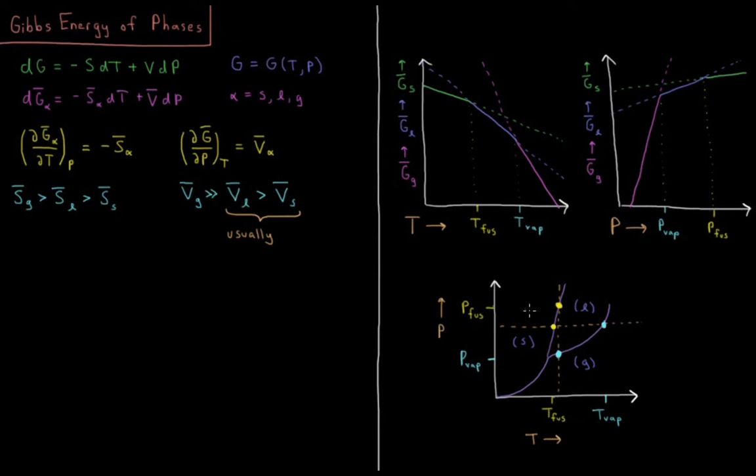So we get a diagram like this where there are regions of single phases being the minimum Gibbs energy, regions where we have coexistence curves where two phases are equal in Gibbs energy to one another at the minimum, and things like the triple point where three phases are in equilibrium. So what is it that governs the shape and the qualitative features of this phase diagram?